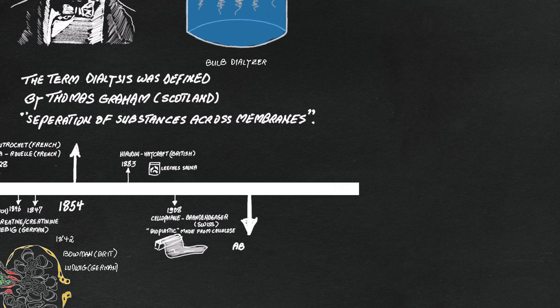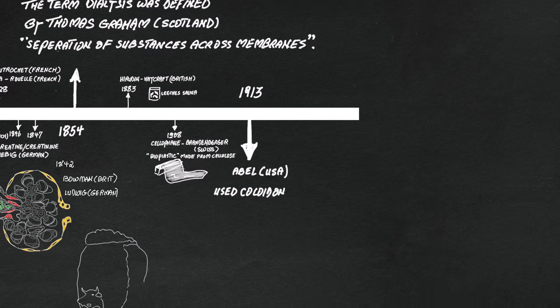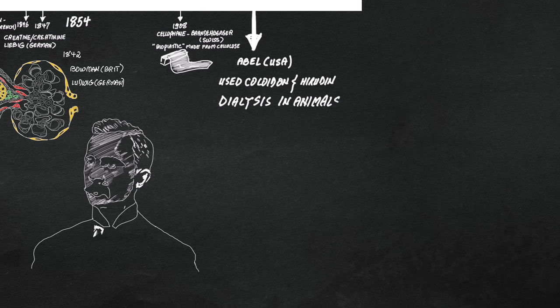The first dialysis ever performed in animals was done by Dr. Abel in the U.S. in 1913, using collodion as the membrane and Hirudin as an anticoagulant.